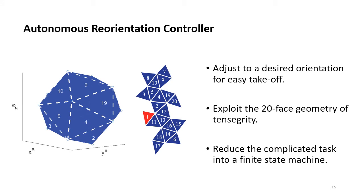The autonomous reorientation controller takes advantage of the 20-face geometry of the tensegrity, and reduces a complicated task into a finite state machine. The controller breaks the whole rotation into a series of easier-to-implement rotations about edges of the tensegrity shell.